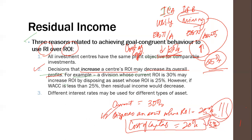Third, with residual income, different interest rates may be used for different types of assets — known as the marginal cost of capital. When you bought one set of assets, there was a specific cost of capital; for the next set, a different one. You know the cost of capital per incremental investment, which allows you to compute RI for different incremental investments more precisely than using one general cost of capital. That's why residual income is superior to ROI.